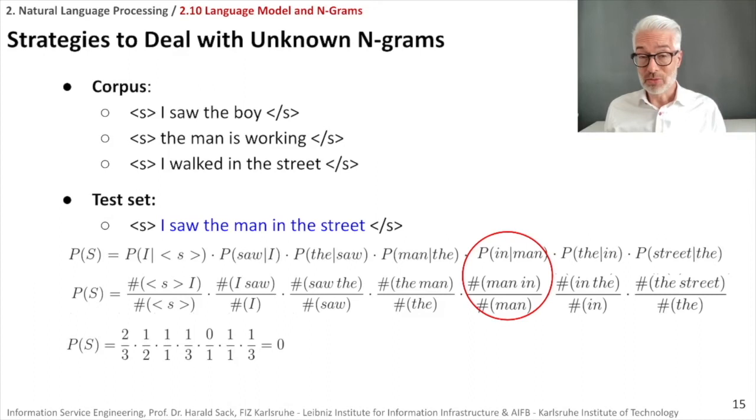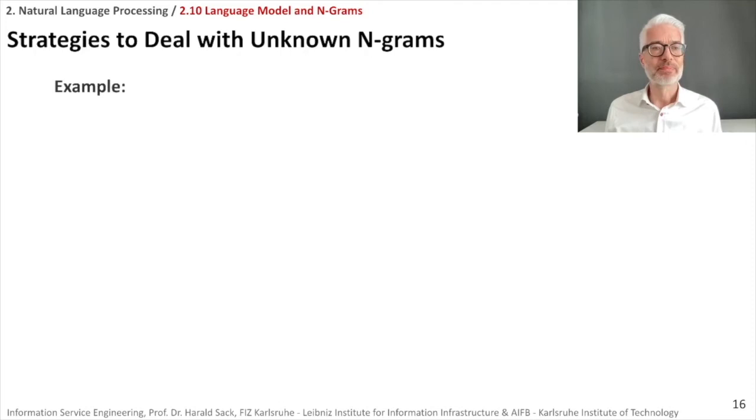The problem is that man-in is a bigram that never occurs in my corpus. So therefore, if I try to estimate the relative frequencies and then I do the multiplication of all of the single probabilities, the conditional probabilities I use here, the result will be zero. Simply because, if this bigram doesn't occur, this affects the complete rest. And then I have the problem, I can't say anything. Then the language model doesn't work anymore. So how do I deal with that?